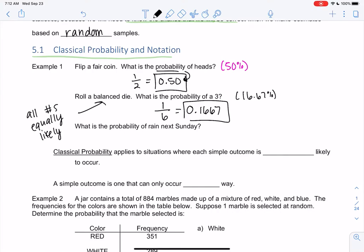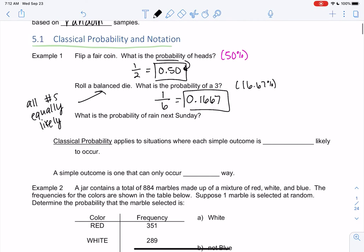People study probability of lots of things. Someone might want to know probability of rain next Sunday, which is something we can't answer right now. We need more information. This is not a classical probability. Classical probabilities are like flipping a coin or rolling a die. We could find the probability of rain, but that's a bit more complicated.